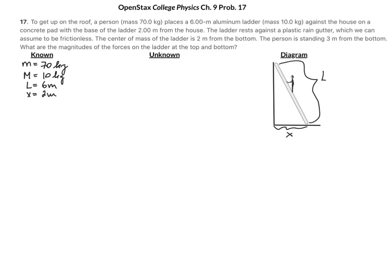I call the total length of the ladder capital L. The center of mass of the ladder is 2 meters from the bottom, so I'll call that lowercase l, and that's 2 meters — that's where the ladder's center of mass is located. The person is standing 3 meters from the bottom, so let's call that d.